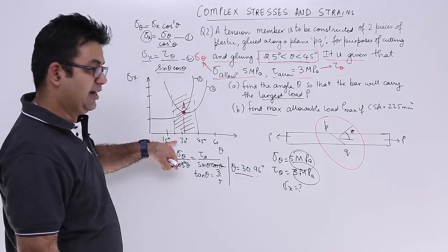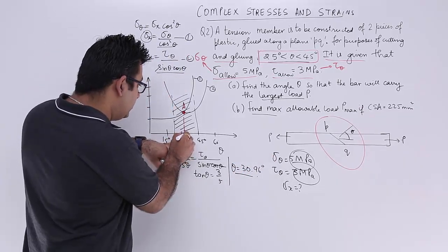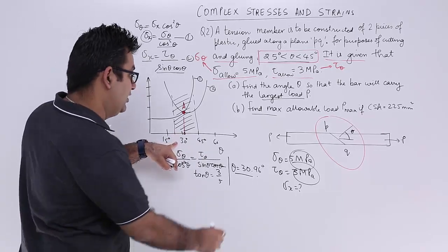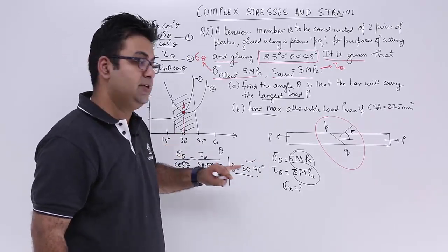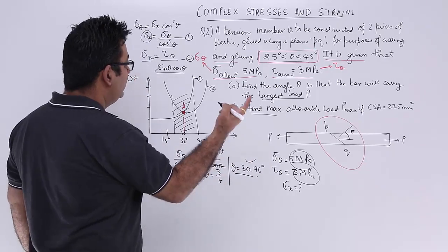From here, theta would be approximately 30.96 degrees. If you look at this graph, this plot is a little bit towards the right of 30 degrees, so yes we are on the right track.